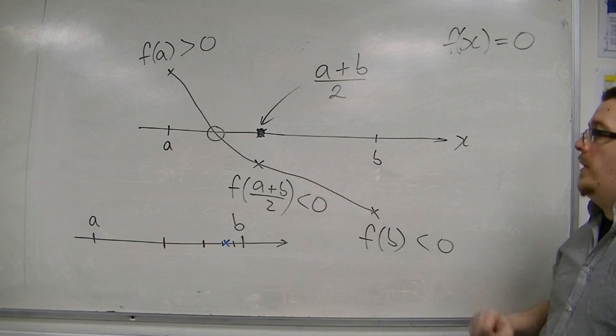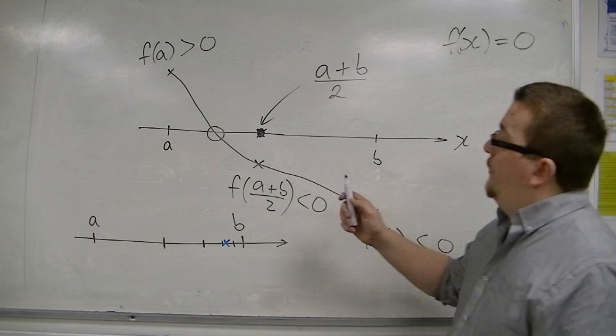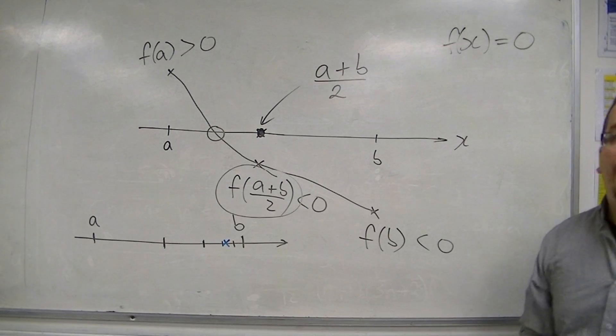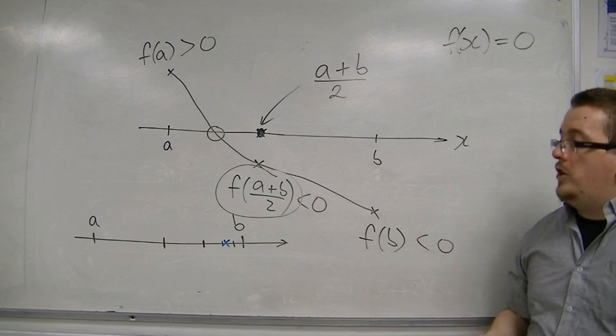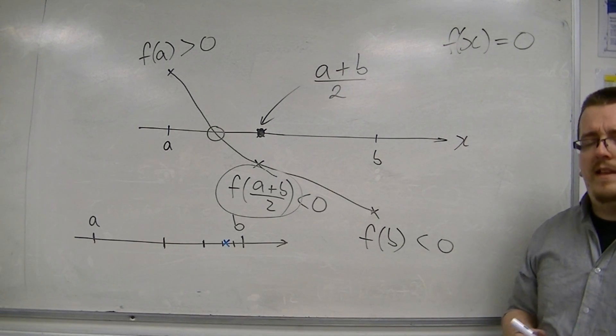So, this is the bisection method, and it uses f of a plus b over 2. And I'm going to show you an example of how this works in the next video.